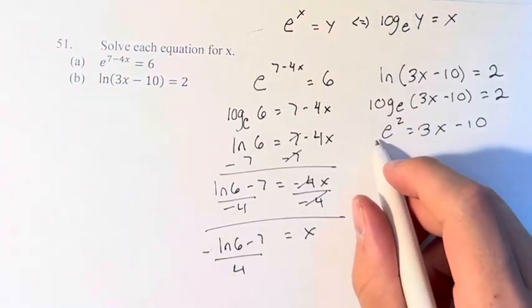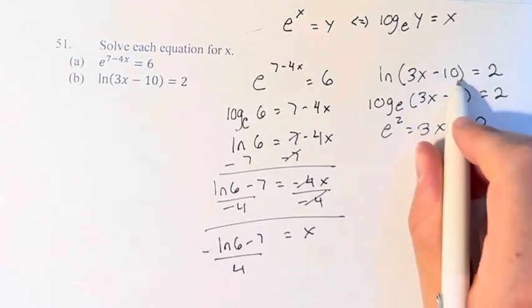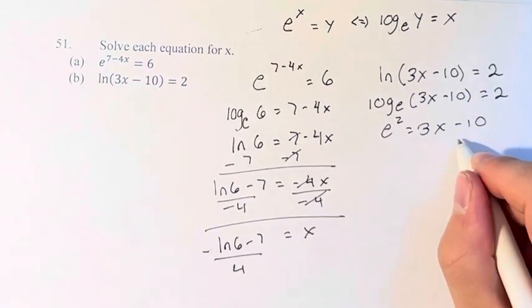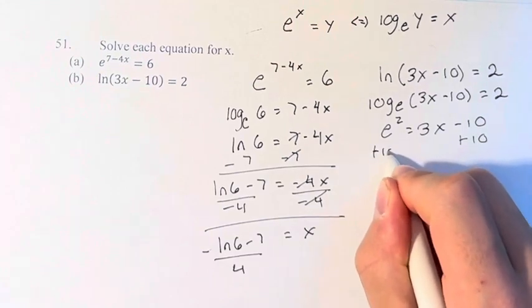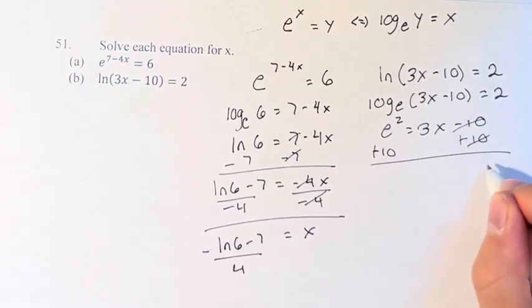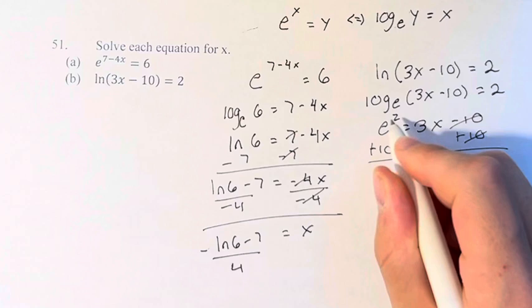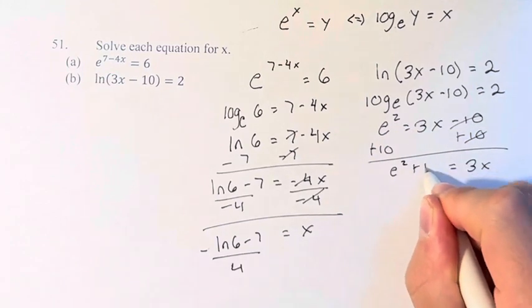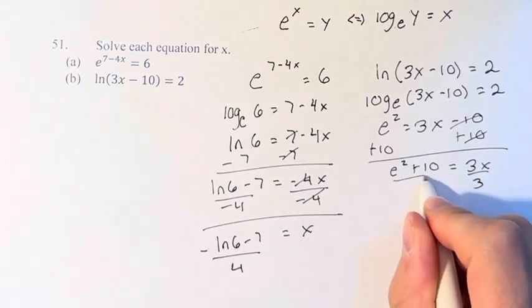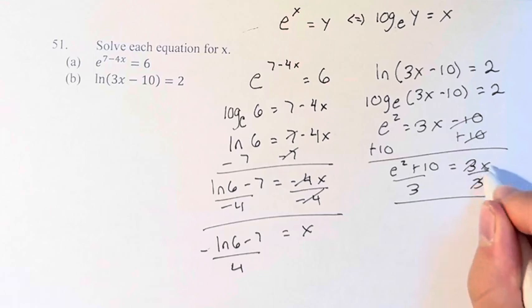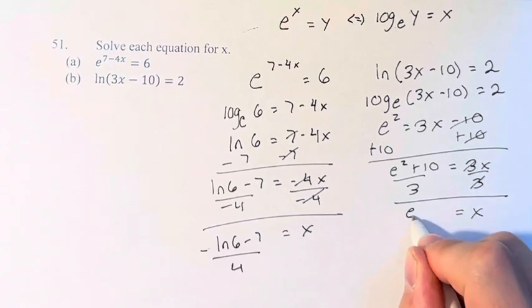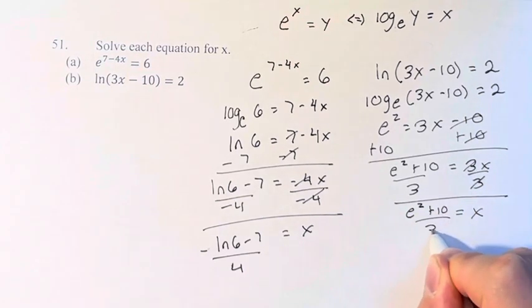Using the same property, we get e squared equals 3x minus 10. We can add 10 to both sides. This cancels, and we're left with 3x equals e squared plus 10. Dividing by 3 to get x on its own, this cancels, and we're left with x is equal to e squared plus 10 over 3.